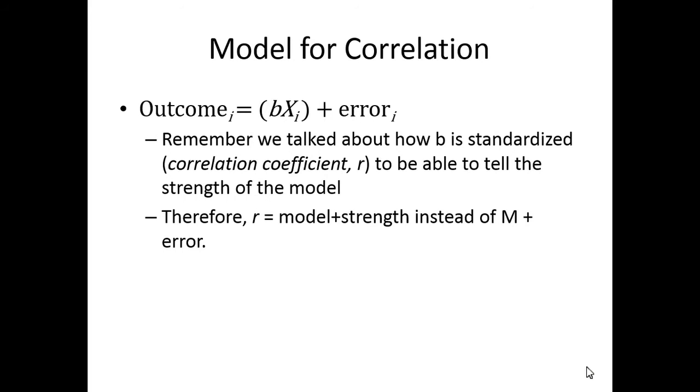So we talked about this last week. So the model for correlation is BX plus error. But when you do correlation coefficients, that's a standardized B. So error and model gets pushed together into R. And so we just look at the strength of R to talk about model fit. So bigger R's fit better. Or you can look at the confidence interval and see how wide the confidence interval is.